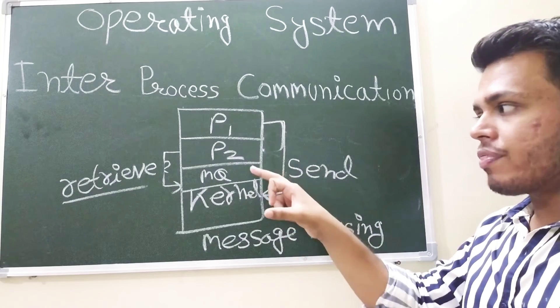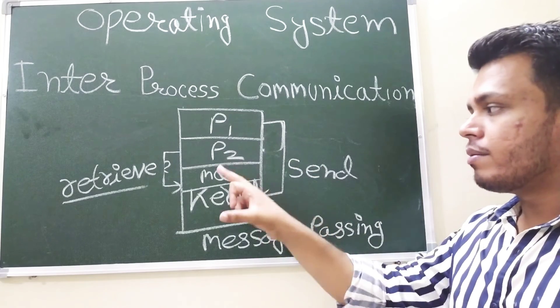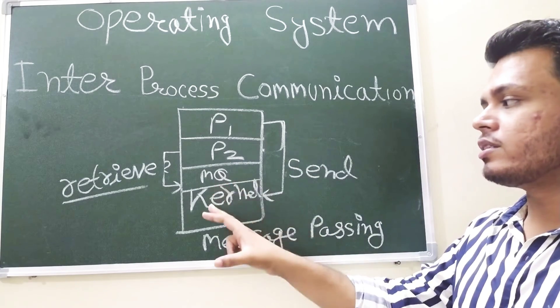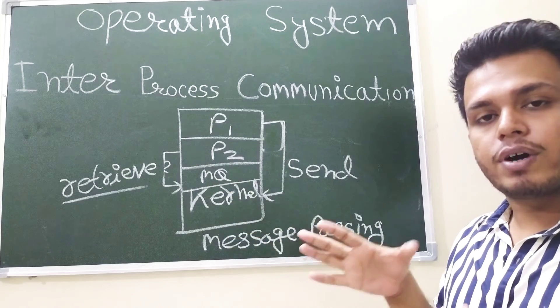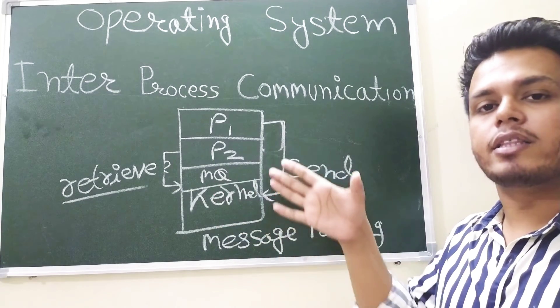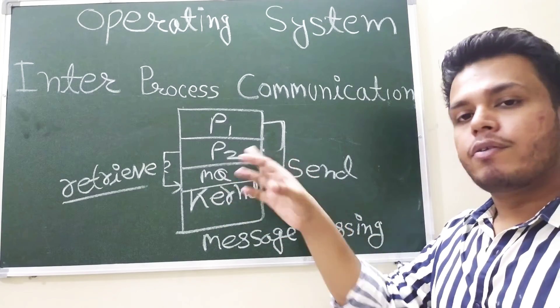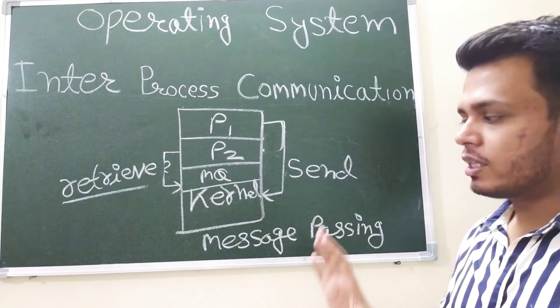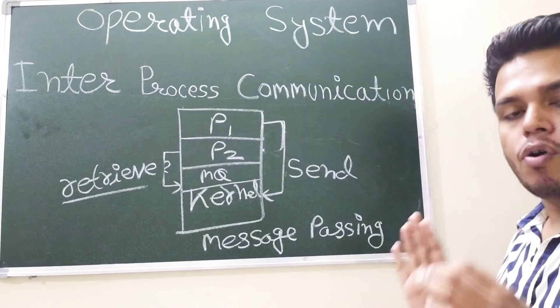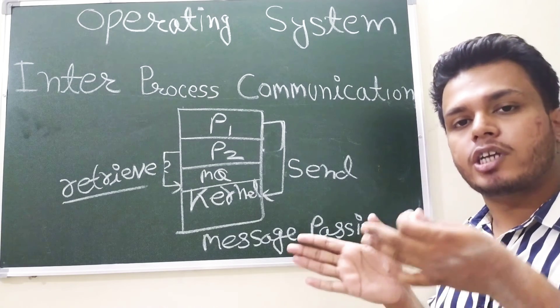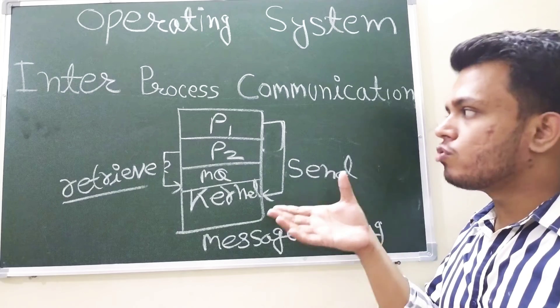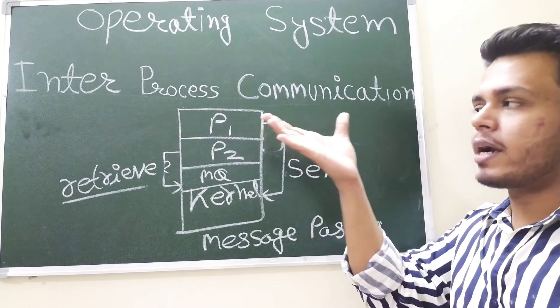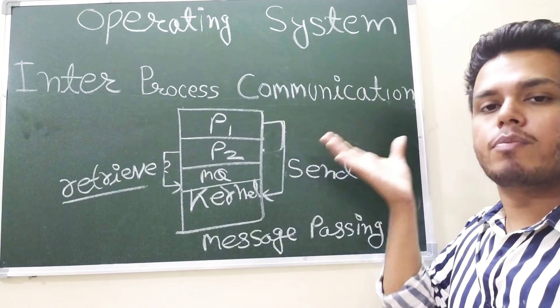Retrieve that message from the message queue. Until the message is not retrieved, the message is stored inside the message queue. Once the message is retrieved by process P2, kernel automatically deletes that particular message. This is the concept of message passing. And we already discussed what is the concept of shared memory.